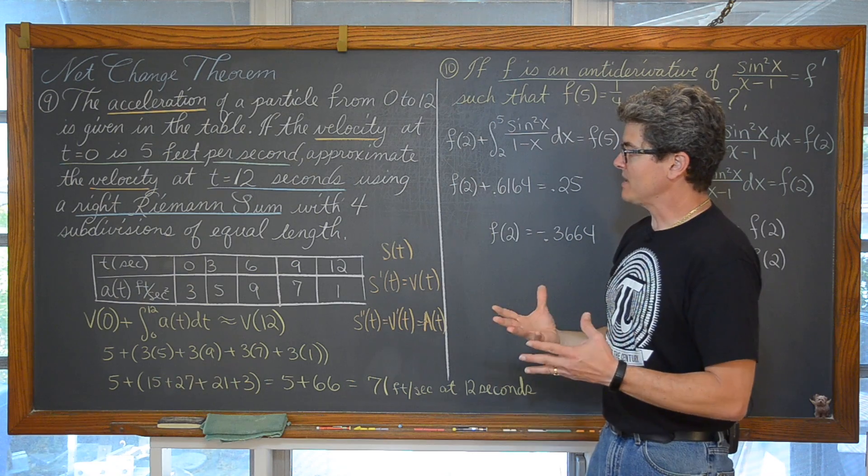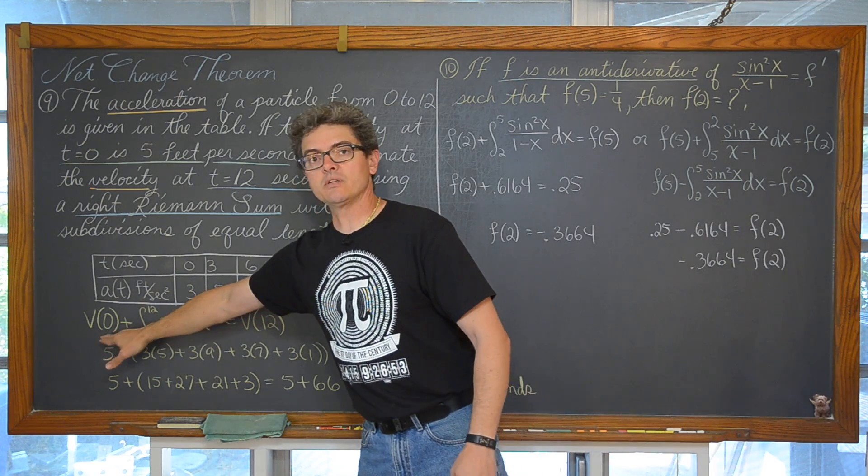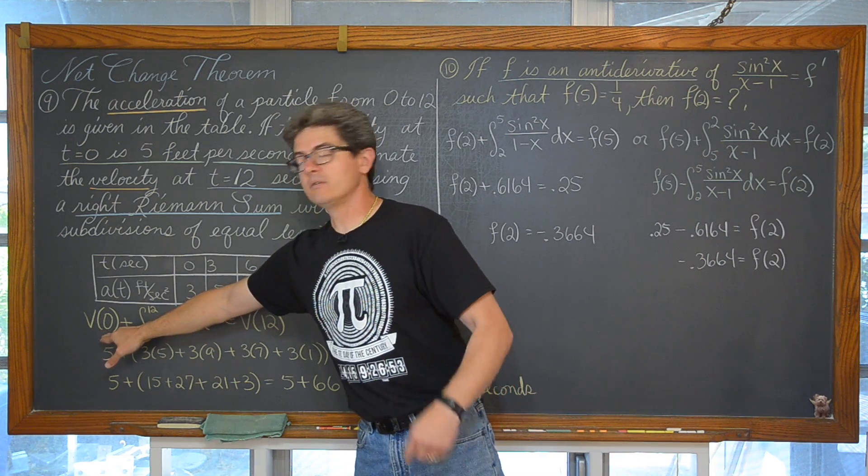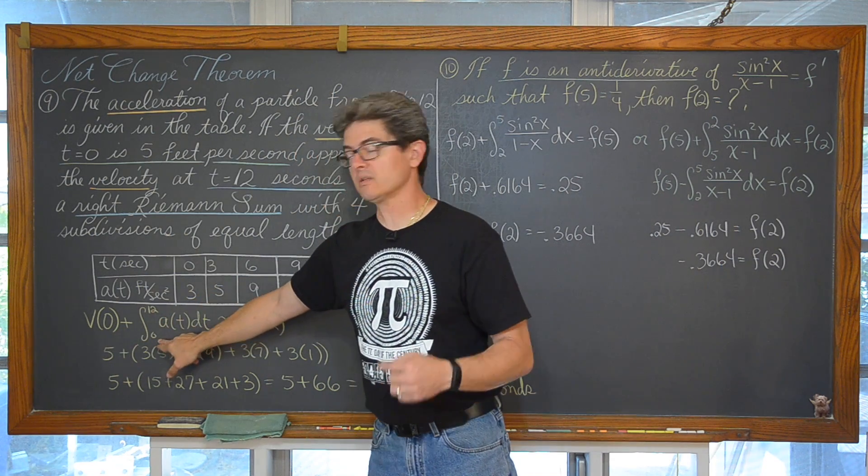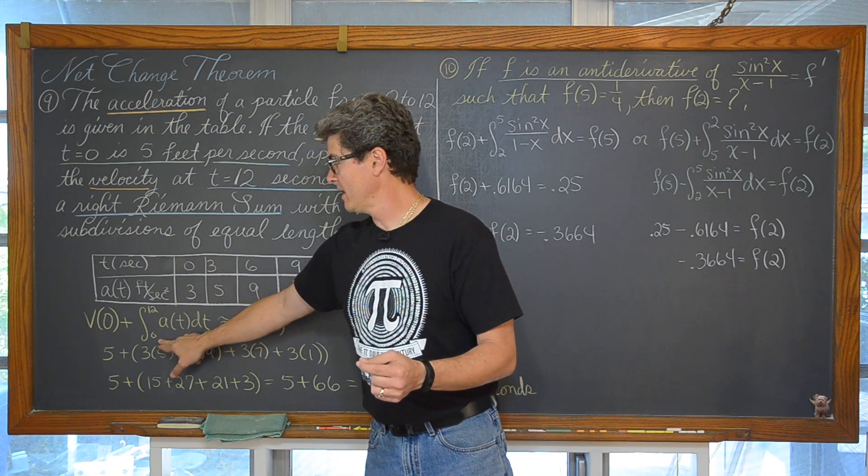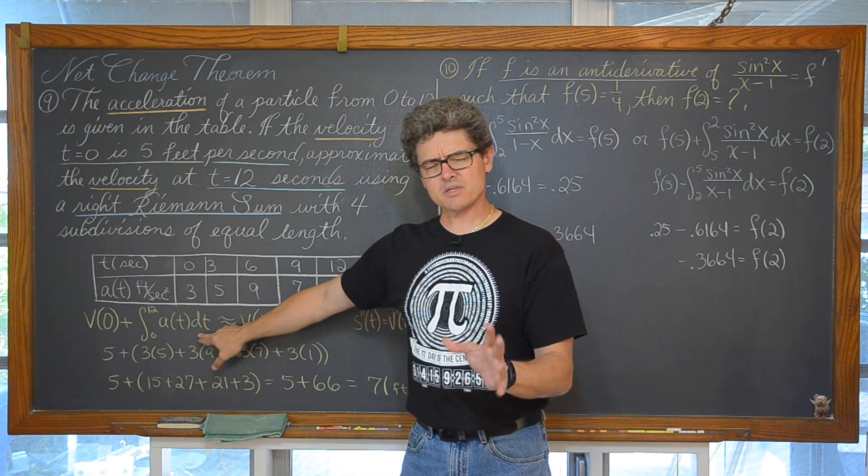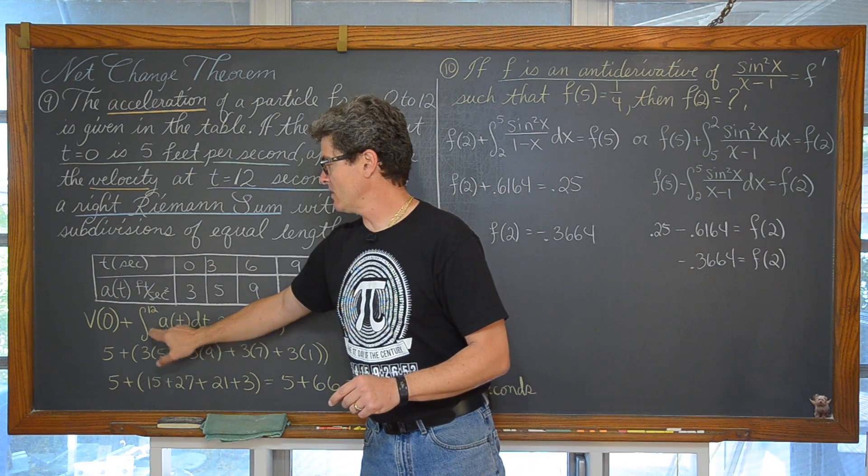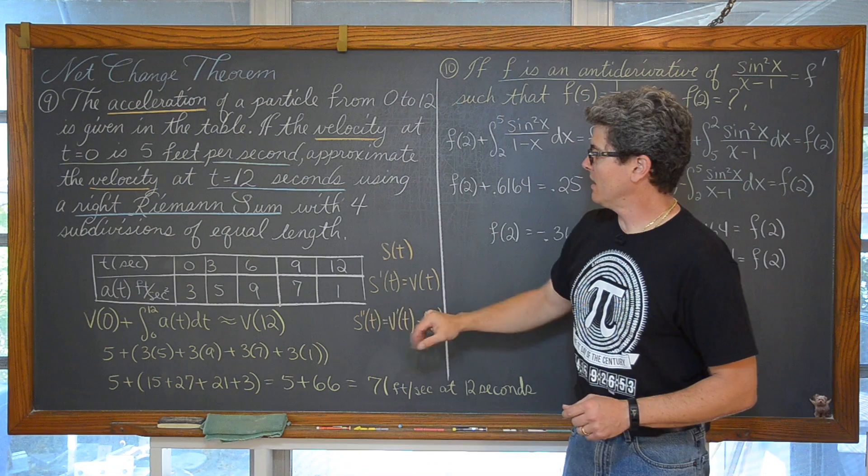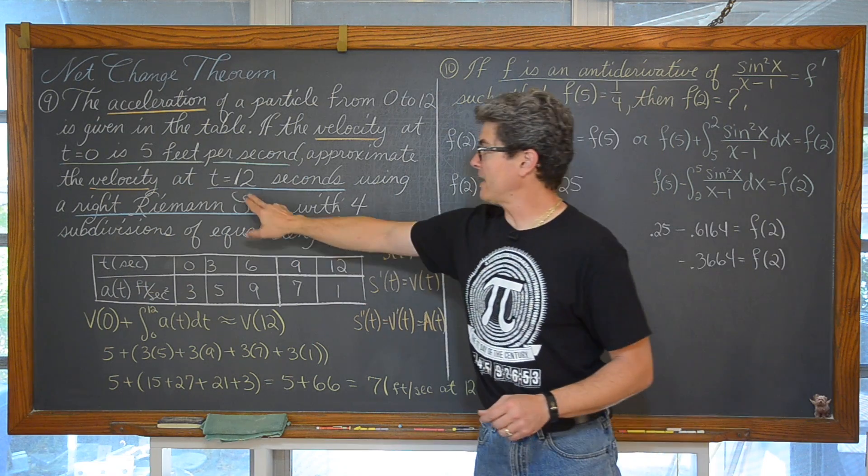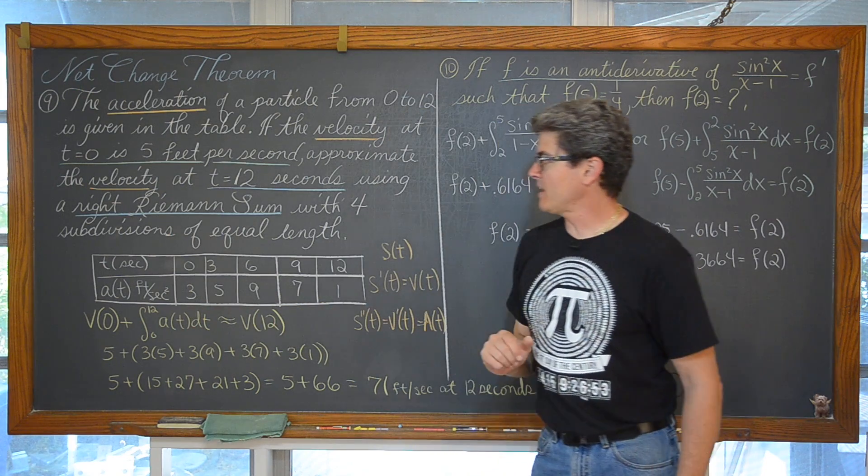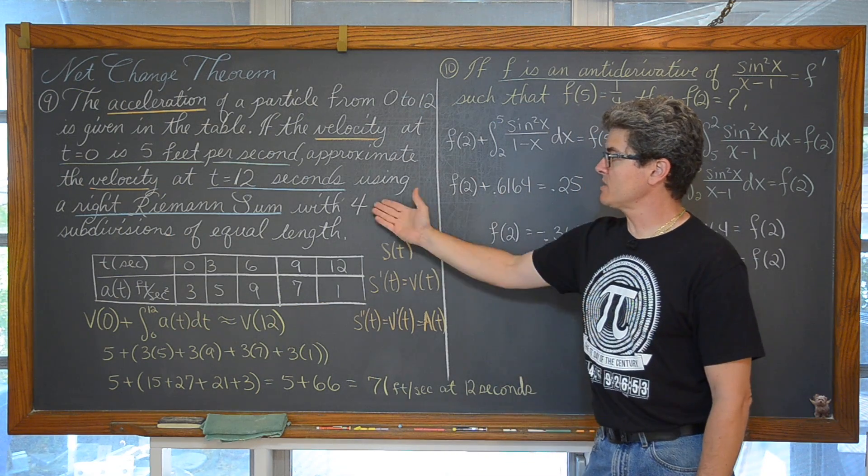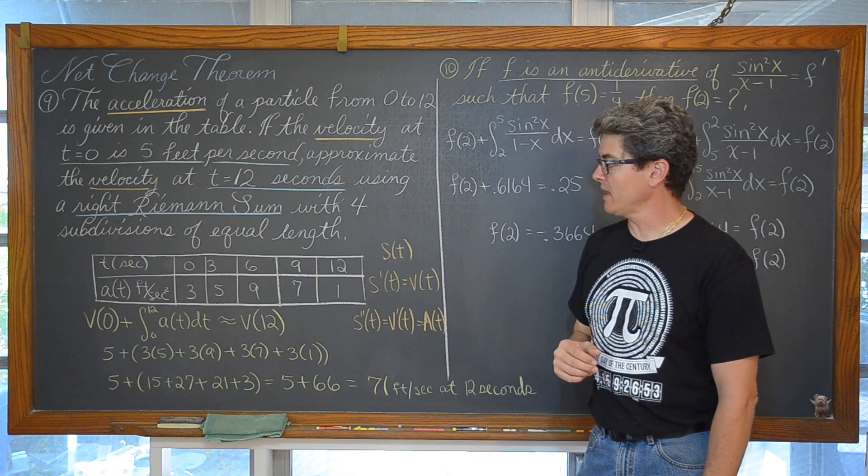So the net change theorem basically just says that take your initial condition and then start from that point in time which is 0. So that is going to be the lower limit of our definite integral. Integrate what is going on with the acceleration between time 0 and time 12. Ultimately that time where we want to estimate the new velocity at.